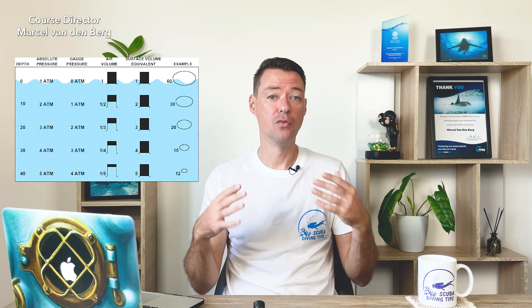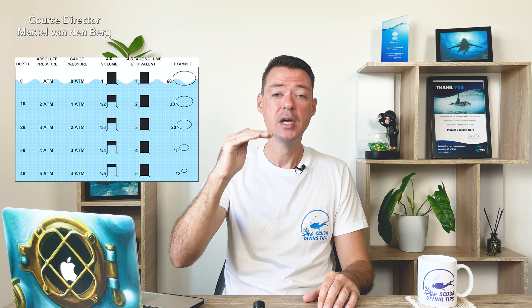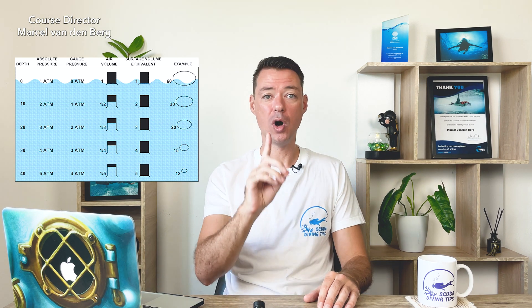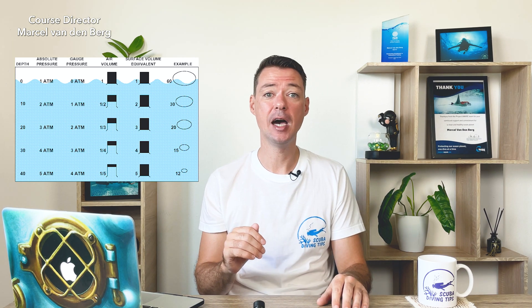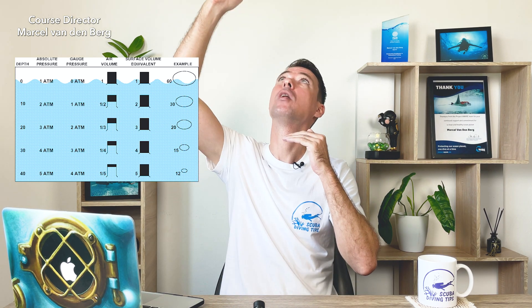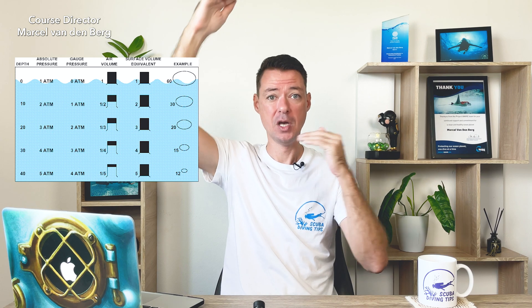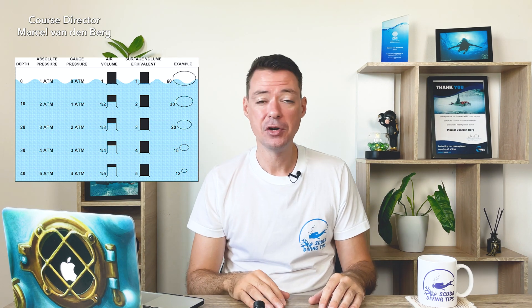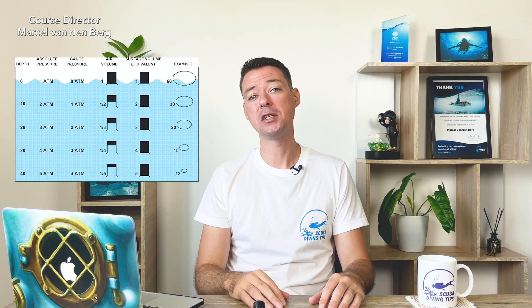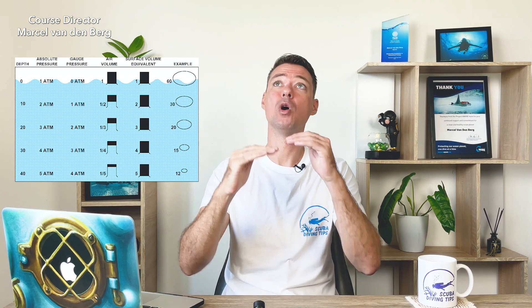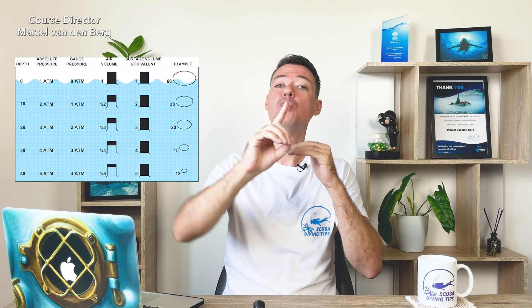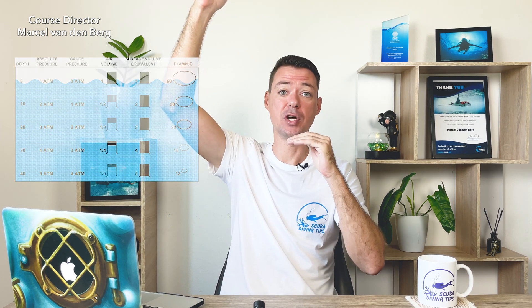How much pressure do we have around us under the water? For every 10 meters that you're going under the water, the pressure increases by one bar. For example, when we're going scuba diving down to 10 meters of depth, you're gonna have one bar of pressure from the water above you. Plus we still have the pressure from the surface, so we're actually having two bar of pressure at 10 meters — one bar from the water and one bar from the surface air pressure.